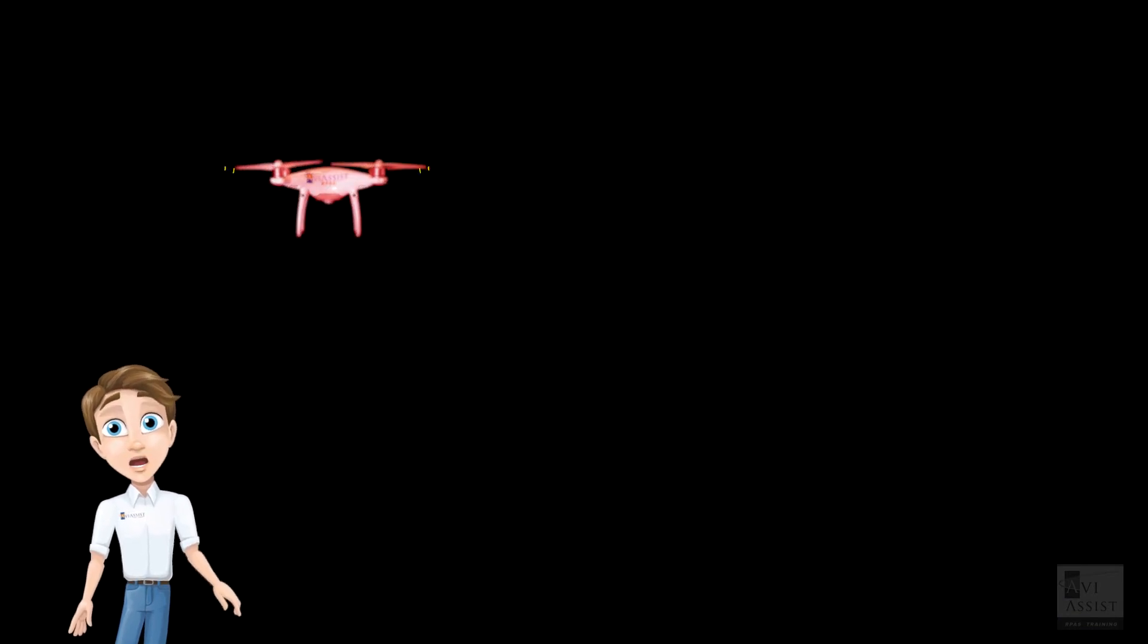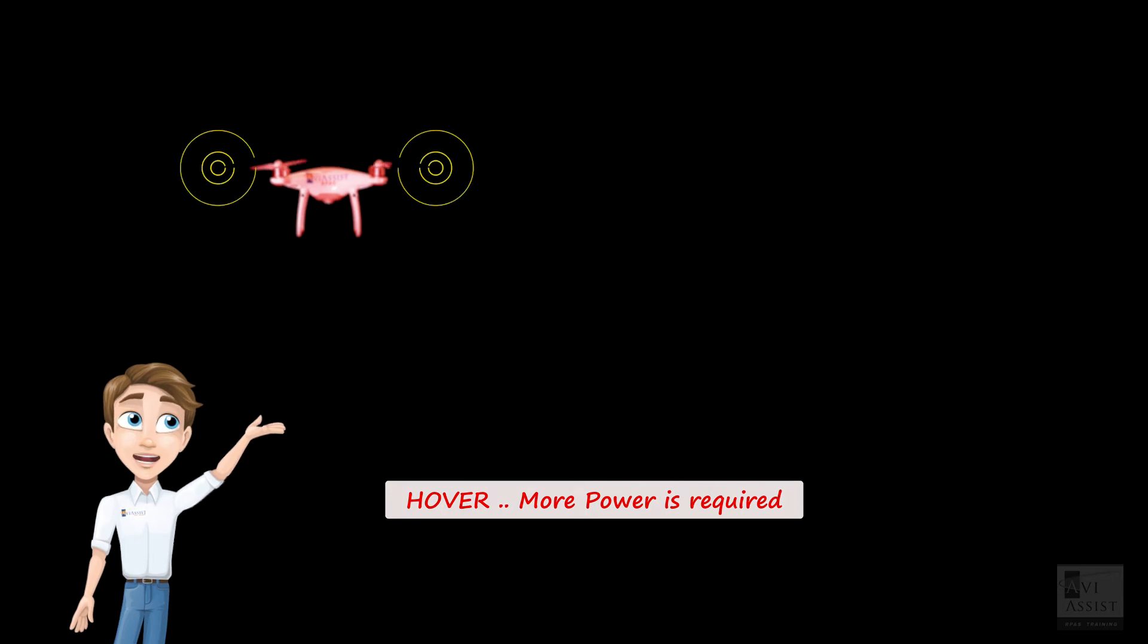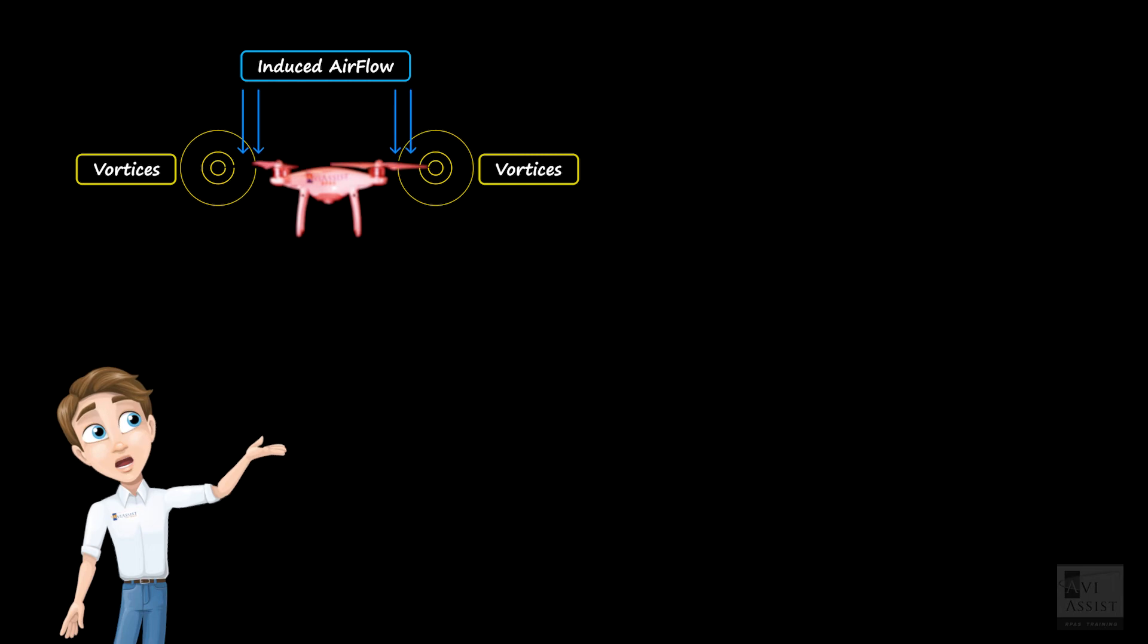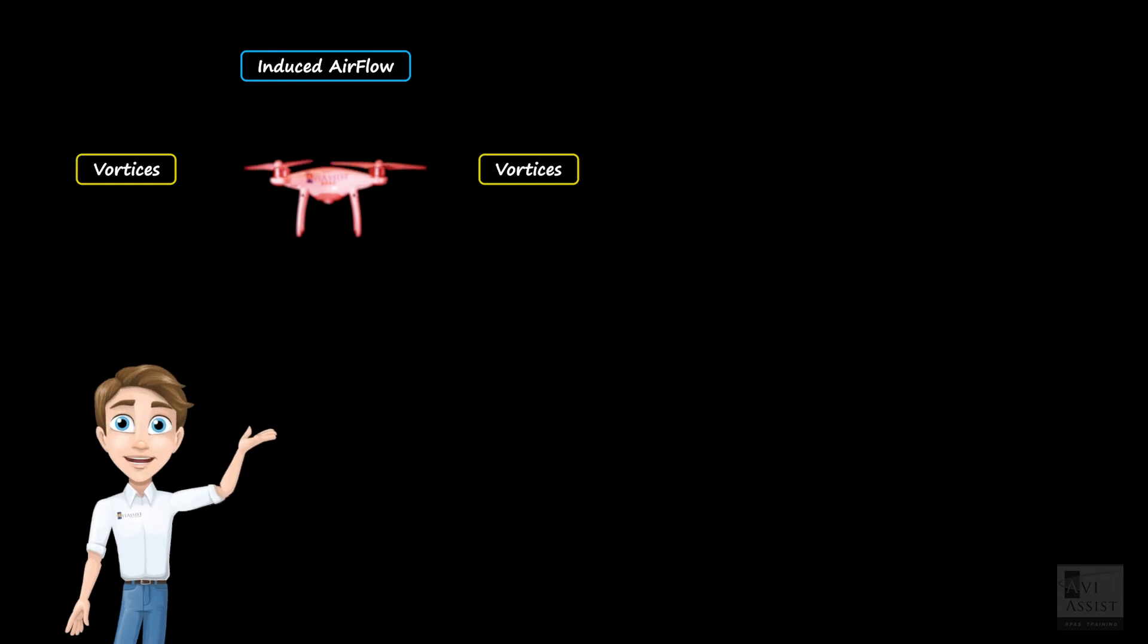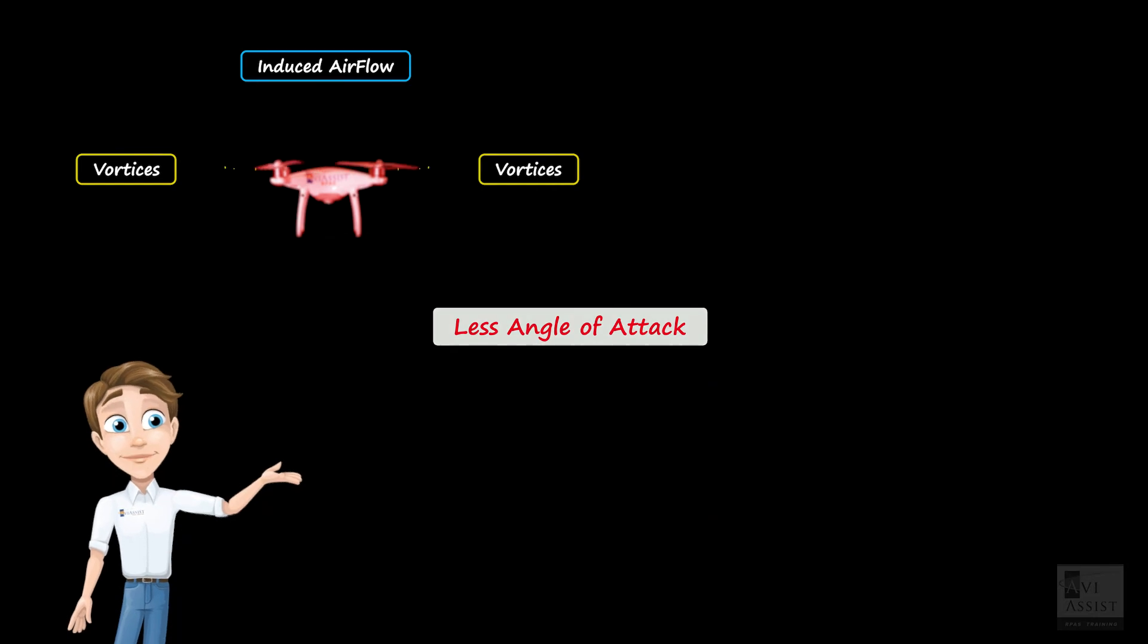As a multirotor climbs out of ground effect in the hover, airflow recirculates through the rotor, resulting in larger vortices and more induced flow. The larger the amount of induced flow, the less angle of attack for any given blade angle. Therefore, a multirotor is least efficient in the hover.